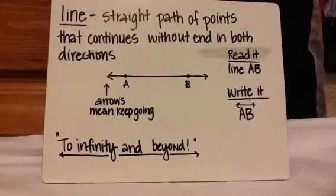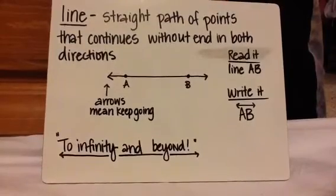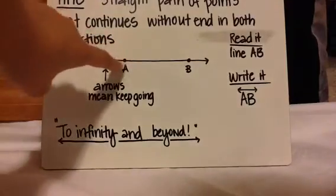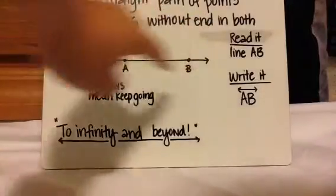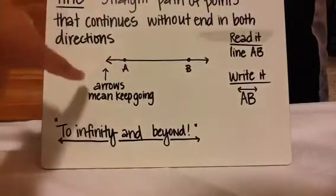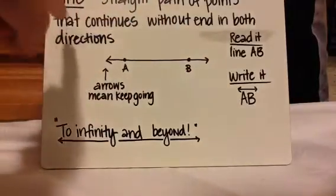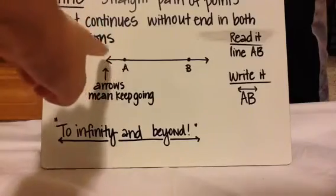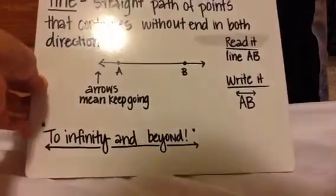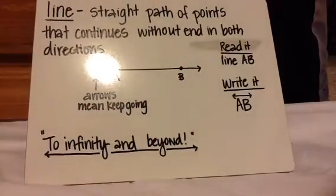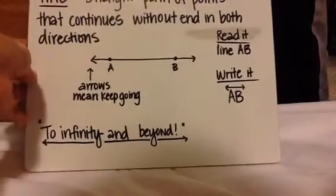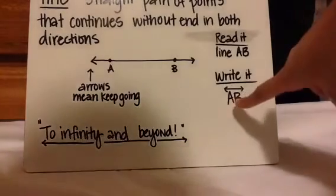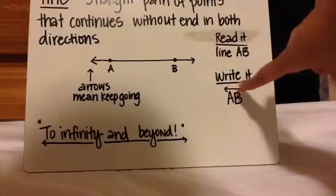The next thing we're going to learn about is what is a line. A line is a straight path of points that continues without end in both directions. So if you have two points, there is a line that can go through them and there will be arrows at the end. The arrows mean that it keeps going. So the way to read this, you call it line AB, and the way to write it is you write AB and then put a line above it with arrows at both ends.